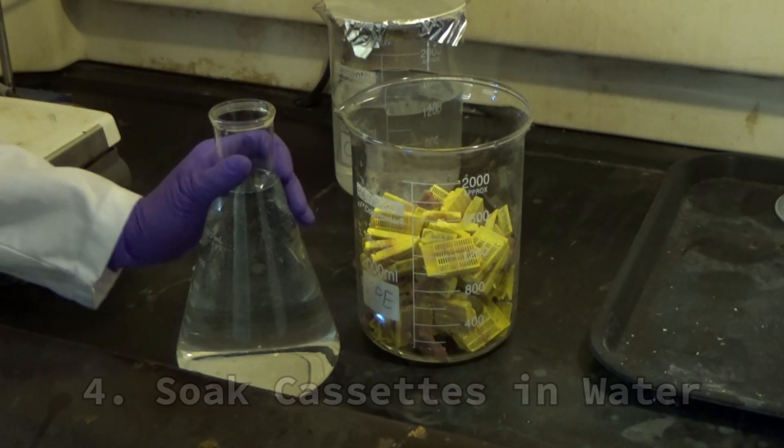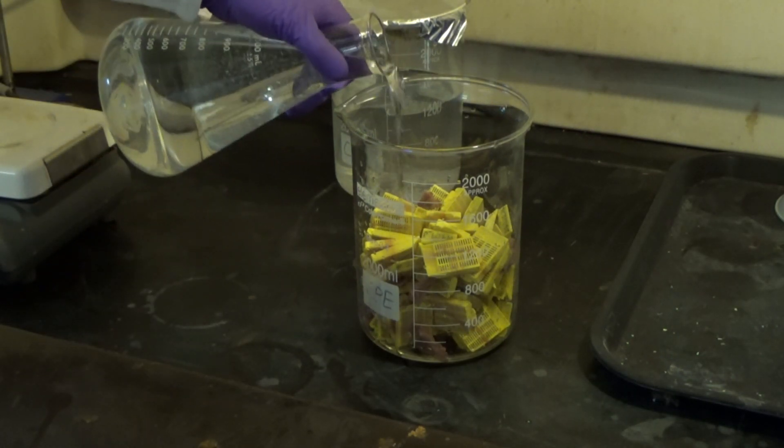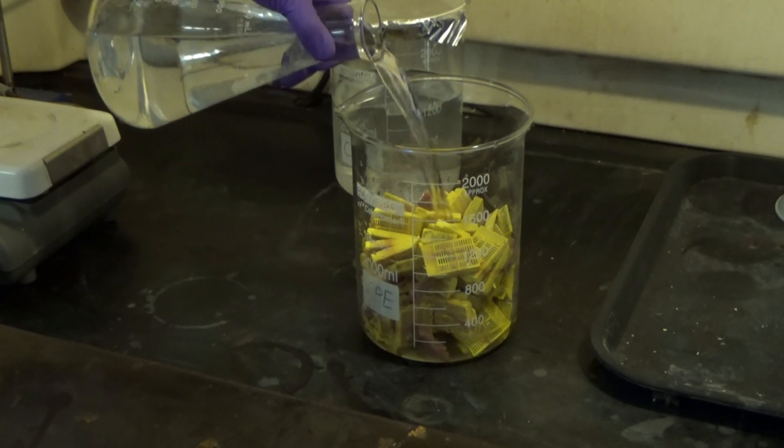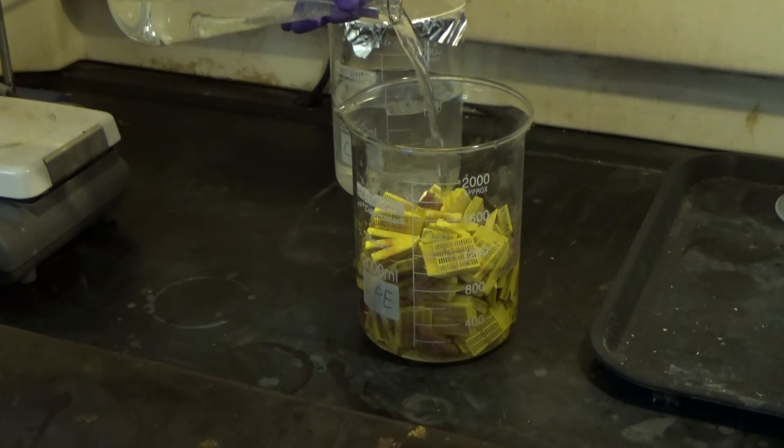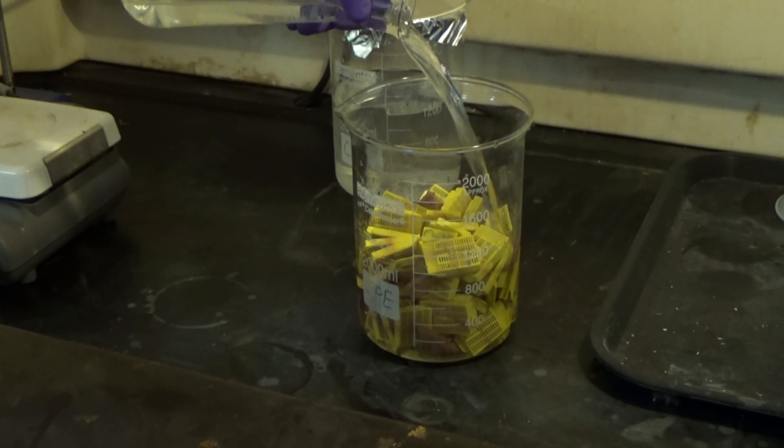Now you should be ready to stain the roots. Place all samples in a beaker with distilled water. You can pour water in over the cassettes in a measured amount to determine how much solution you'll need to mix up. The cassettes should be fully submerged.